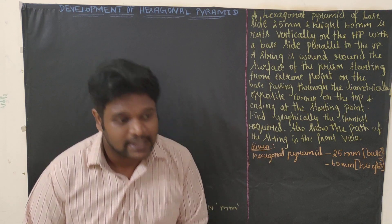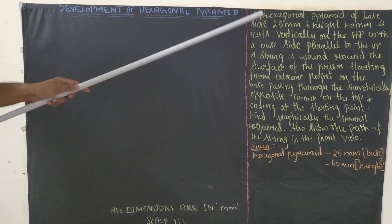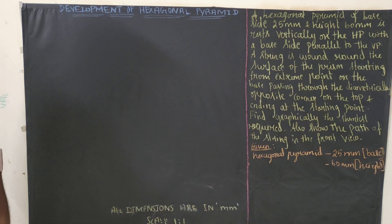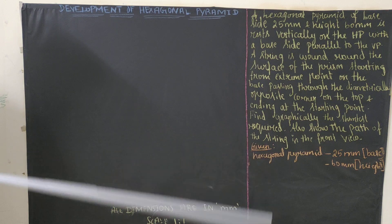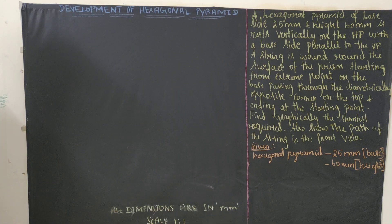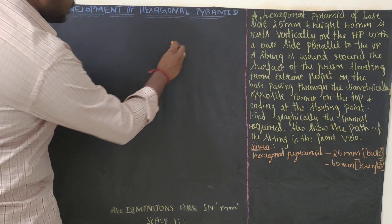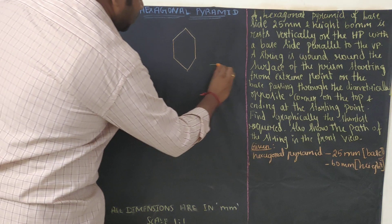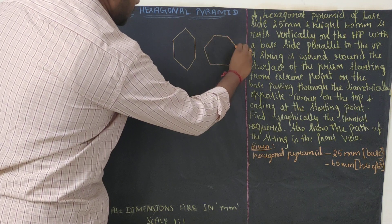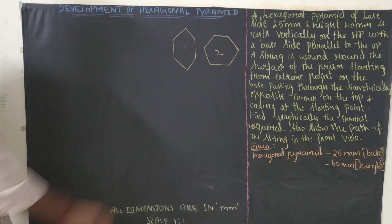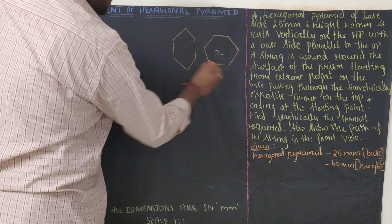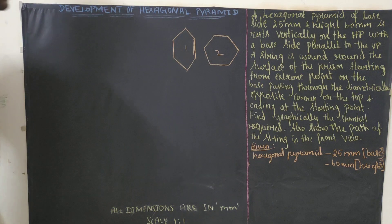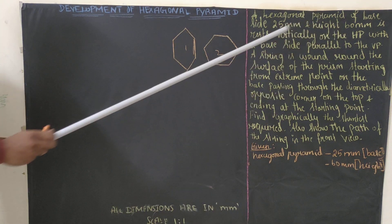So let us see the problem. What they gave in the question is a hexagonal pyramid of base side 25 mm and height 60 mm. Since it is a hexagonal pyramid, the base diagram would be a hexagon. We can draw a hexagon in two different ways - either this way or the other way. These are the base edges.